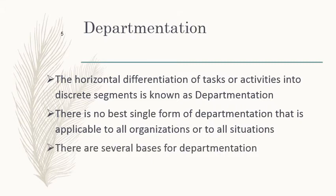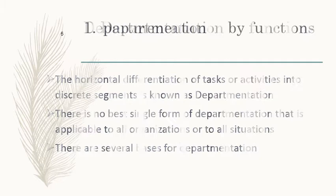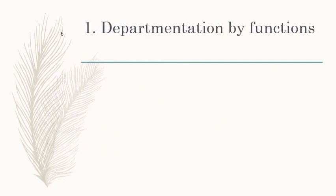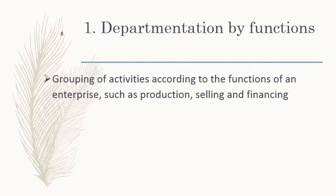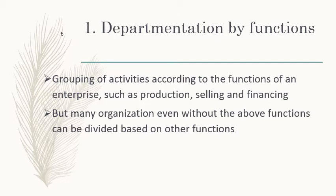There are several bases for departmentation. The first one is departmentation by functions — the grouping of activities according to the function of an enterprise, such as production, financial, selling, design, or purchasing functions. The division is based on what function each group performs. Many organizations can also be divided based on other functions as well.